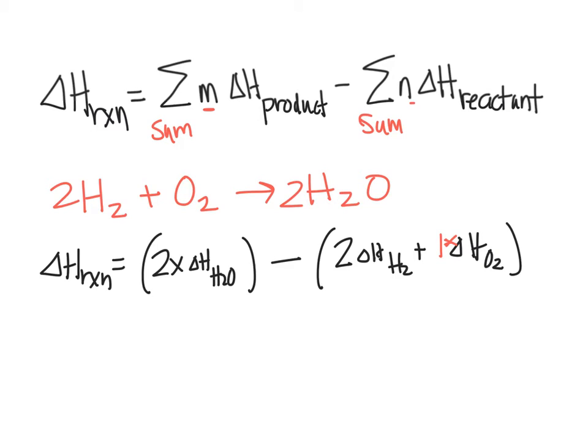Again, we're doing the products minus the reactants, and you're going to plug in the numbers for the delta H values for the H2O, the H2, and the O2. Then you add them and subtract them to find the delta H for the reaction of formation.